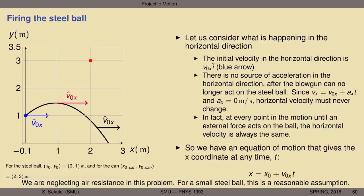Recall the equation of motion: the velocity at a later time equals the velocity at an earlier time plus the acceleration times the time. Since the acceleration component in the x direction is zero, the velocity in the horizontal direction remains constant throughout the entire motion — at every point until an external force acts on the ball. So we have an equation of motion that gives the x coordinate at any time t after the steel ball is fired: x equals x₀ plus v₀ₓ times t.